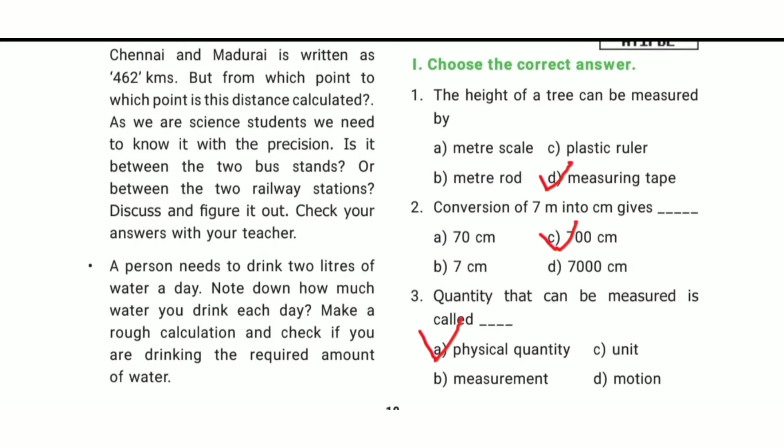A quantity that can be measured is called dash. The answer is option A — physical quantity.